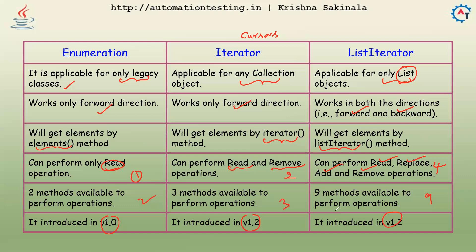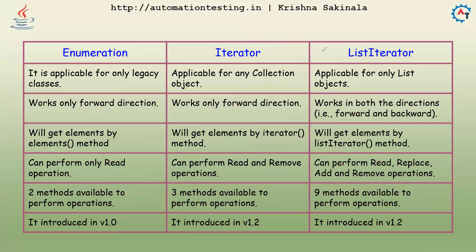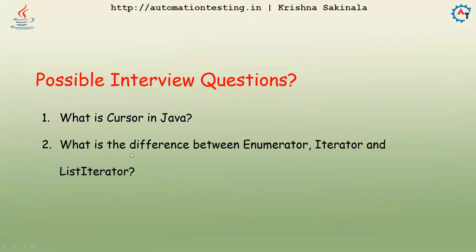So these are all the differences between Enumeration, Iterator, and ListIterator — six differences in total. Possible interview questions from this topic include: what is a cursor in Java, and what is the difference between Enumeration, Iterator, and ListIterator? That's all for this video, thank you.